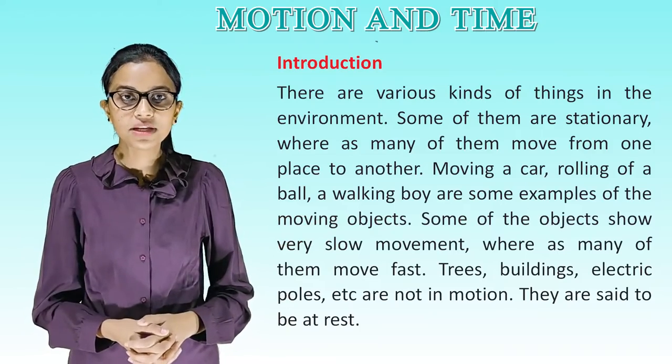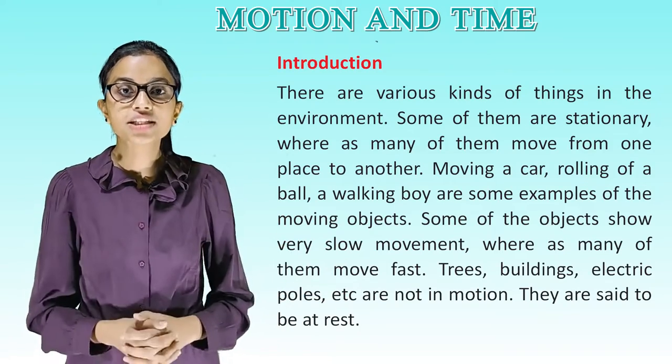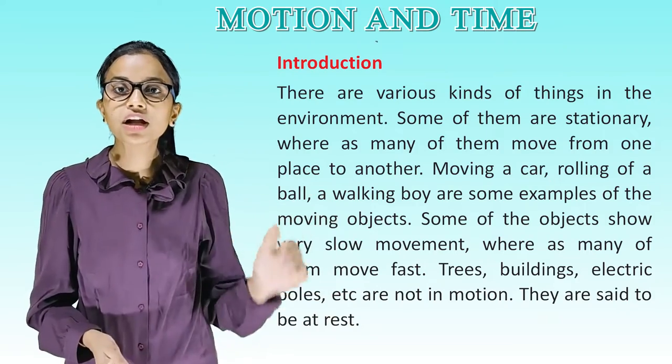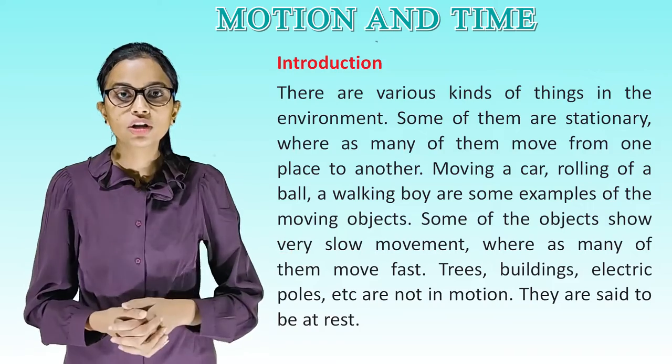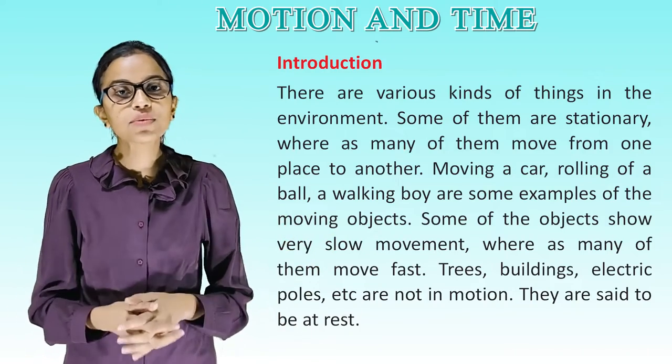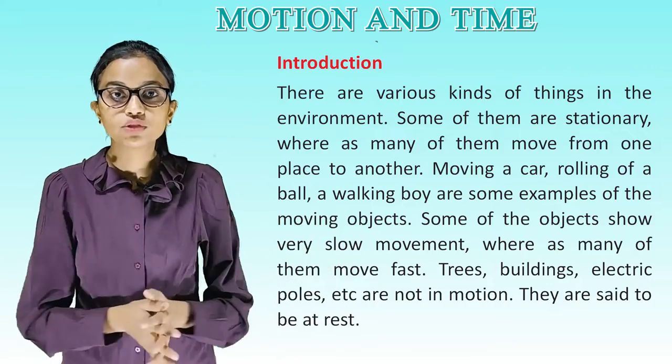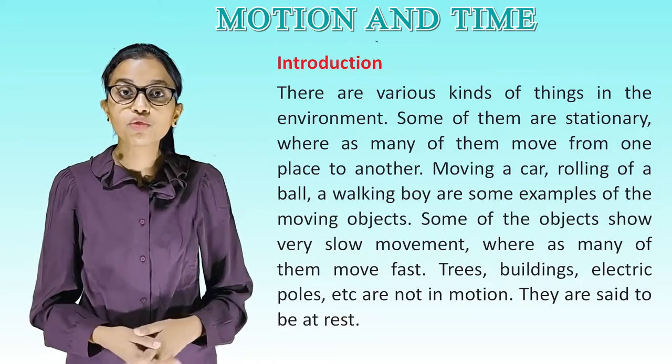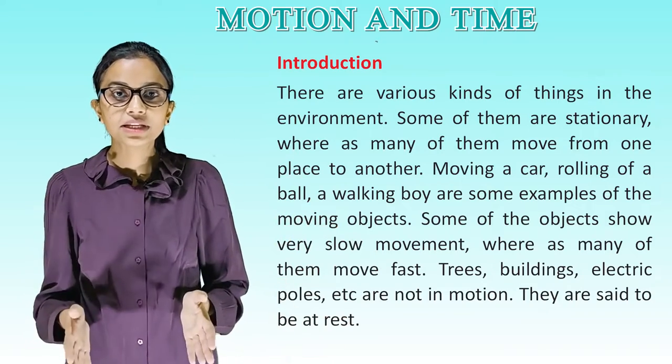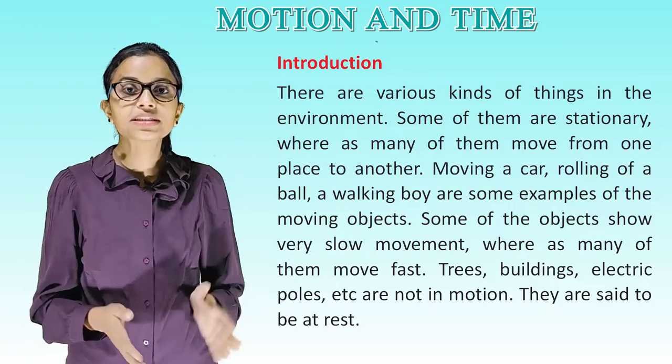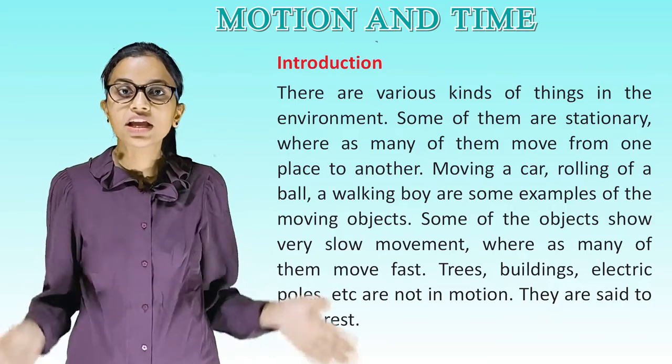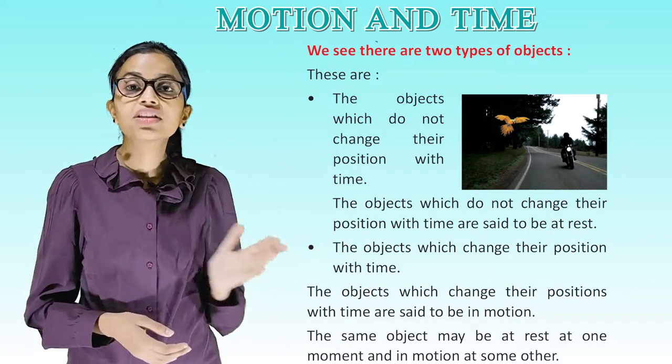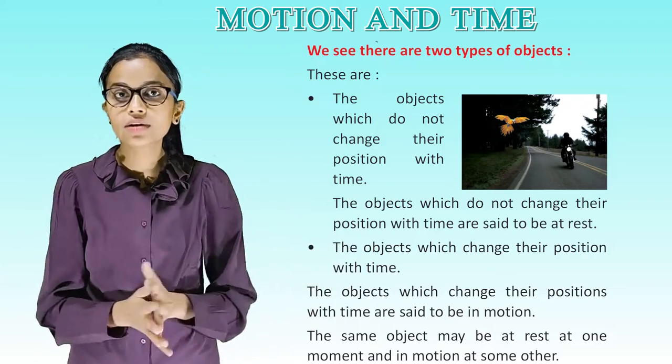Let's start introduction. There are various kinds of things in the environment, some of them are stationary whereas many of them move from one place to another. A moving car, rolling ball, a walking boy are some examples of moving objects. Some of the objects show very slow movement whereas many of them move fast. Trees, buildings, electrical poles etc. are not in motion, they are said to be at rest.